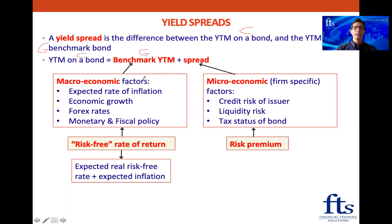The yields on the benchmark government bonds are determined by macroeconomic factors — things like the expected rate of inflation, what's the economic growth rate of the country, what's the GDP growth, the forex rates, what currency the bond is denominated in, and then what's the monetary and fiscal policies of the government.